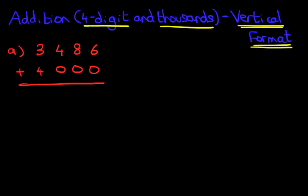I've spaced the numbers out so we know what we're doing. Our question is 3,486 plus 4,000. Let's label the columns: units, tens, hundreds, and thousands. Let's begin our addition as we always do on the right-hand side.